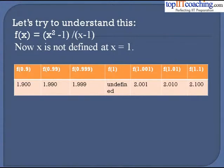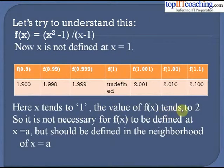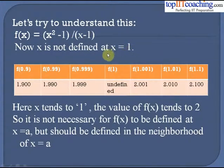Similarly, taking values just greater than 1: f(1.001) = 2.001, f(1.01) = 2.010, and f(1.1) = 2.100. We see that the values of f(x) tend to 2 as x tends to 1. So it is not necessary for f(x) to be defined at x = a, but it should be defined in the neighborhood of x = a. Hence, the limit as x tends to 1 of f(x) is equal to 2.